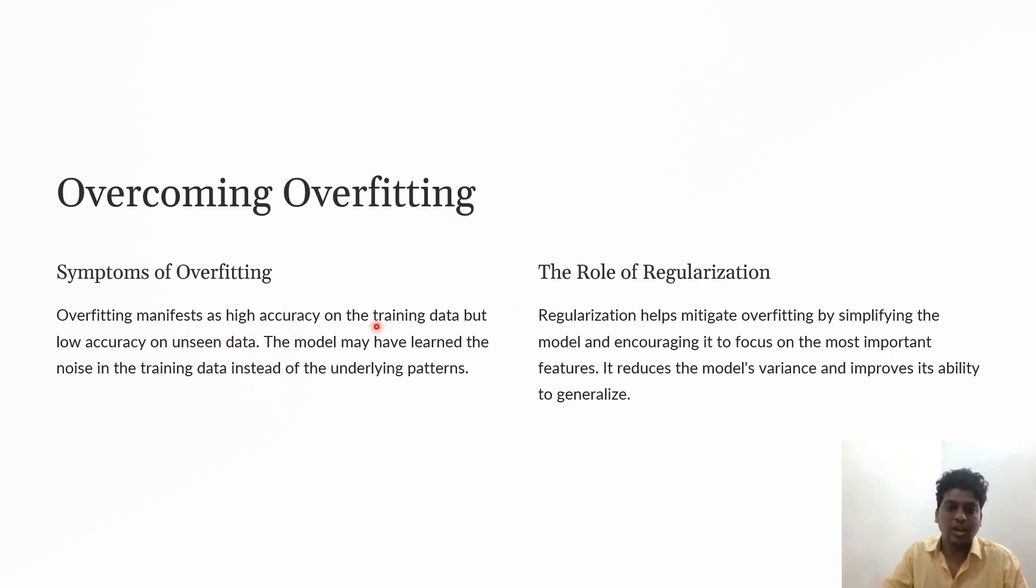How can we identify overfitting? When there's high accuracy on training data but low accuracy on testing data, the model has learned noise in the training data instead of patterns. Regularization eliminates overfitting by simplifying the model and focusing on important coefficients.